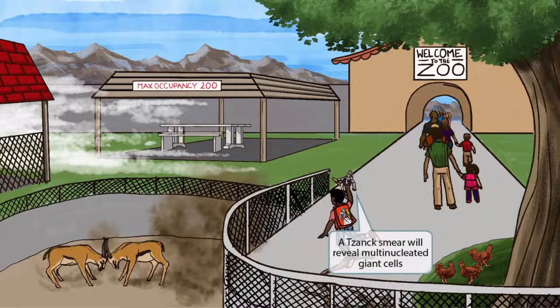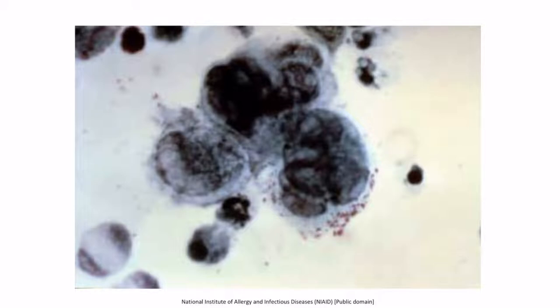Notice that we've added a kid who appears to be tripping over this root. If you look at his backpack and the toy figure in his hand, you can see that he has an obsession with the Greek god Zeus. This Zeus character is here to help you remember that a Tzanck smear will reveal multinucleated giant cells. This is an image of a Tzanck smear showing multinucleated giant cells.